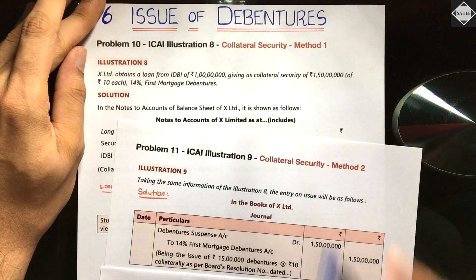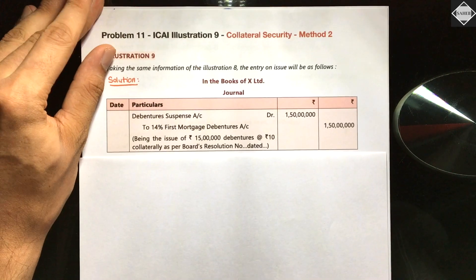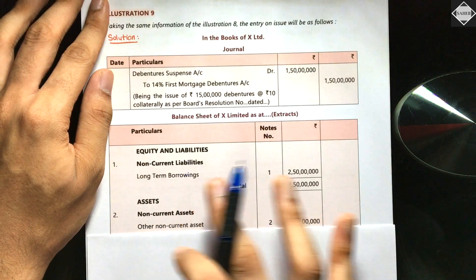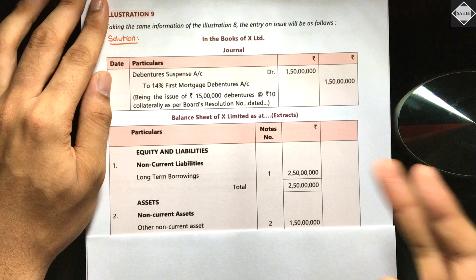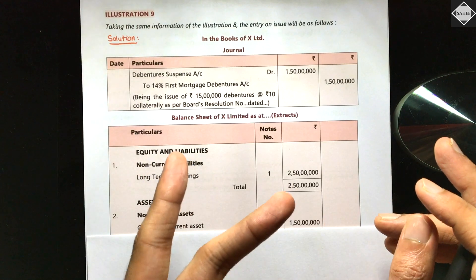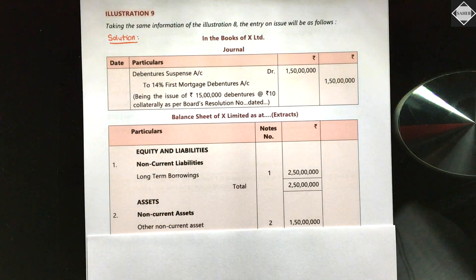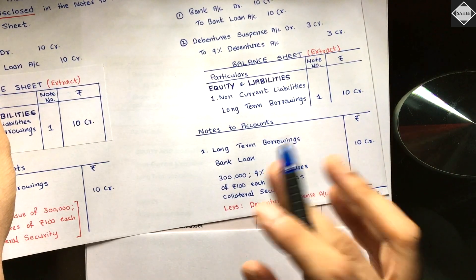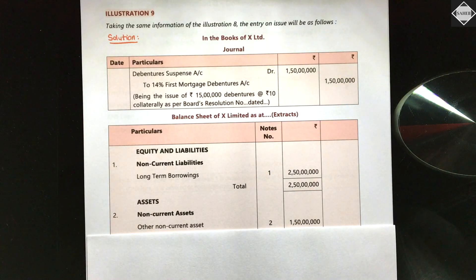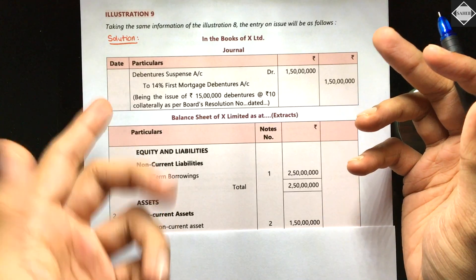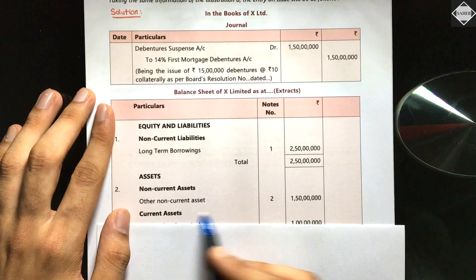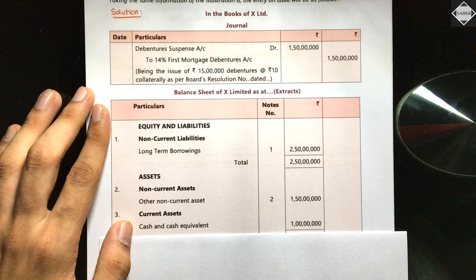In the balance sheet under Equity and Liabilities, Non-Current Liabilities, Long-Term Borrowings: both the debentures (1 crore 50 lakhs) and the loan (1 crore) appear. There are two ways to present Method 2. In Class 12 and B.Com, a cancellation presentation is followed. But in CA Foundation, you separately show the debentures as a liability and the Debenture Suspense Account as an asset.